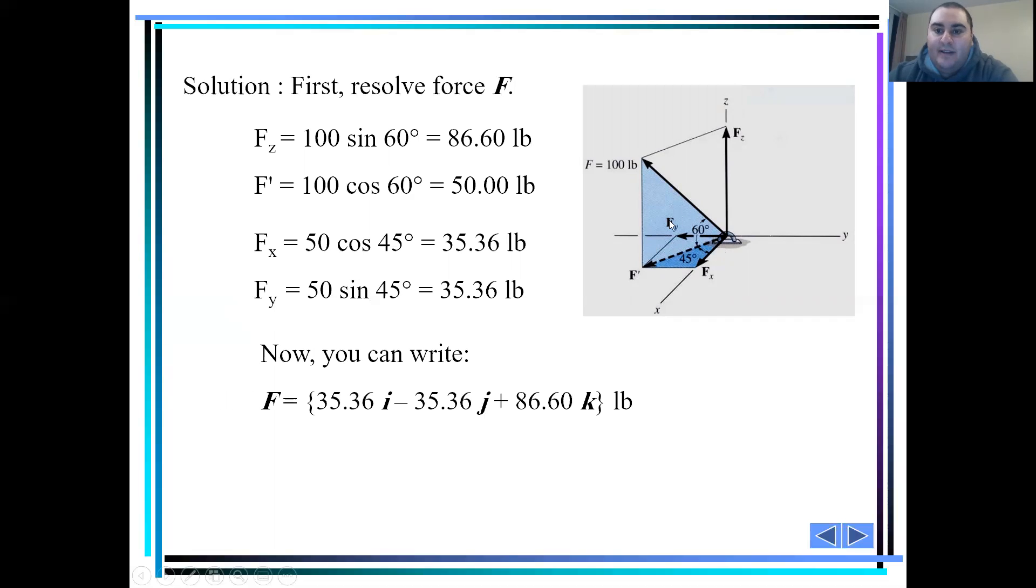Now that we have our x, y and z components, we can write our F in Cartesian coordinates: fx times i minus fy times j plus fz times k. And that's all for our second mini-lecture.